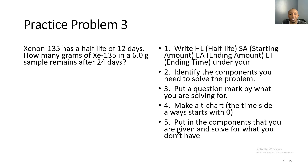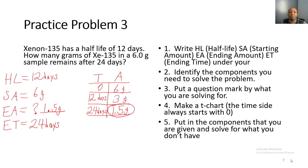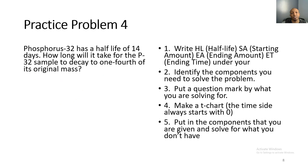Now for independent practice. Let's review practice problem three: Xenon-135 has a half-life of 12 days. Starting amount was 6 grams, ending time was 24 days, and we needed the ending amount. Starting at zero with 6 grams: 12 + 12 = 24 days on the time side. On the amount side: 6 ÷ 2 = 3, 3 ÷ 2 = 1.5 grams. So the ending amount is 1.5 grams.